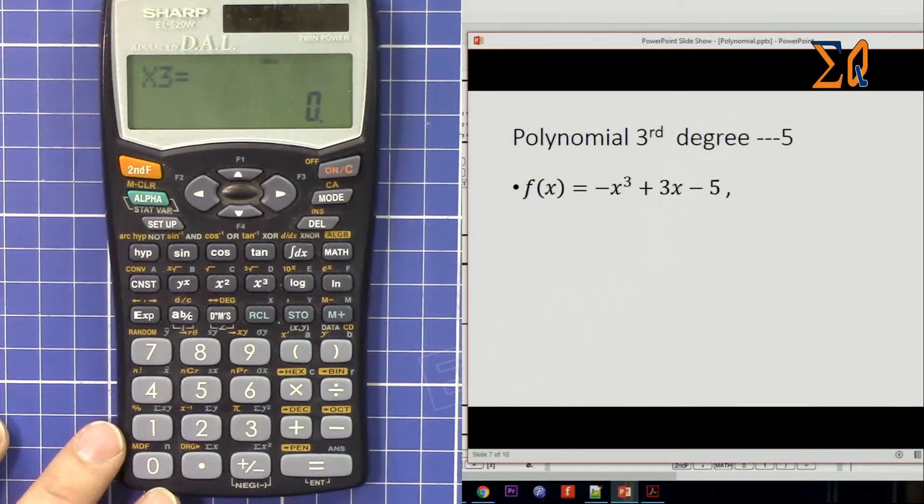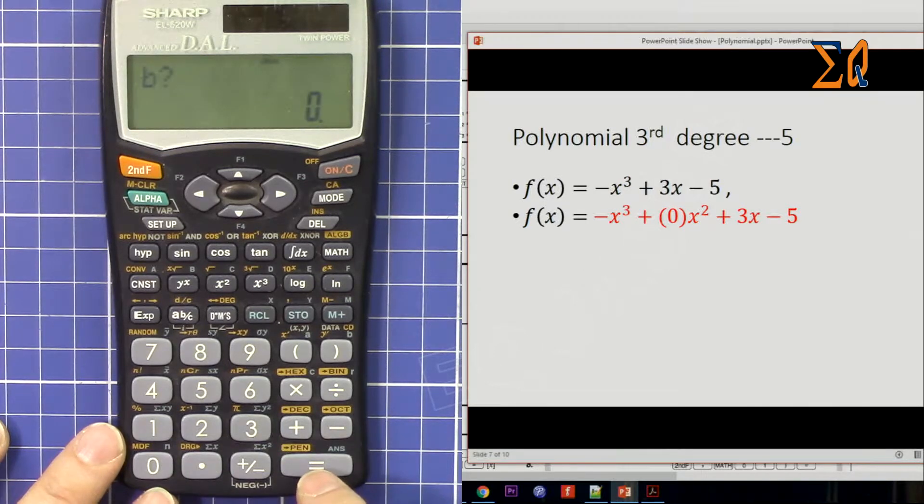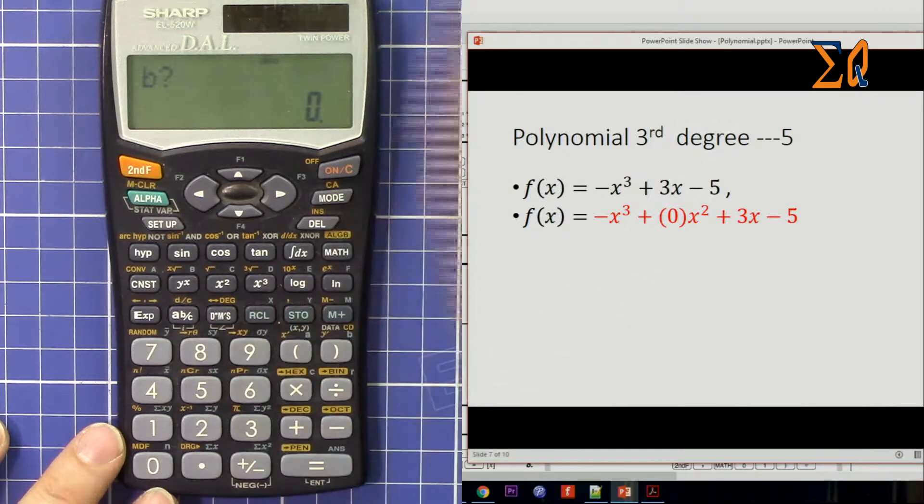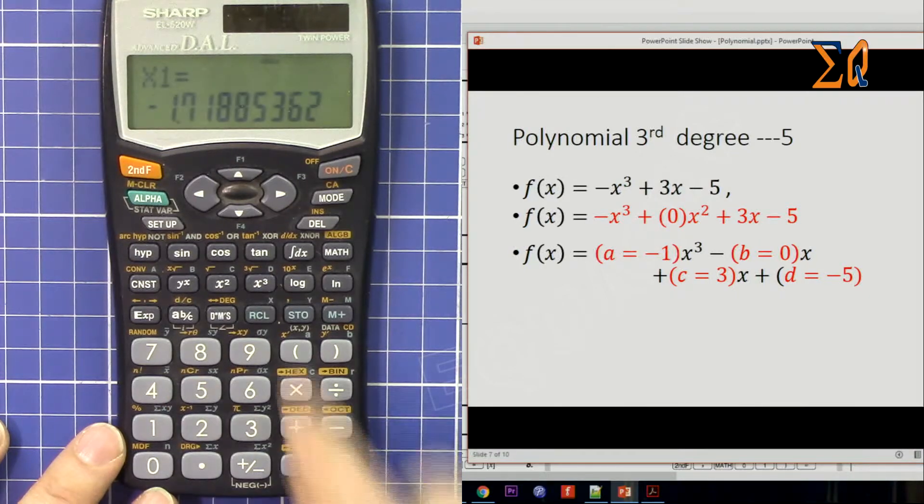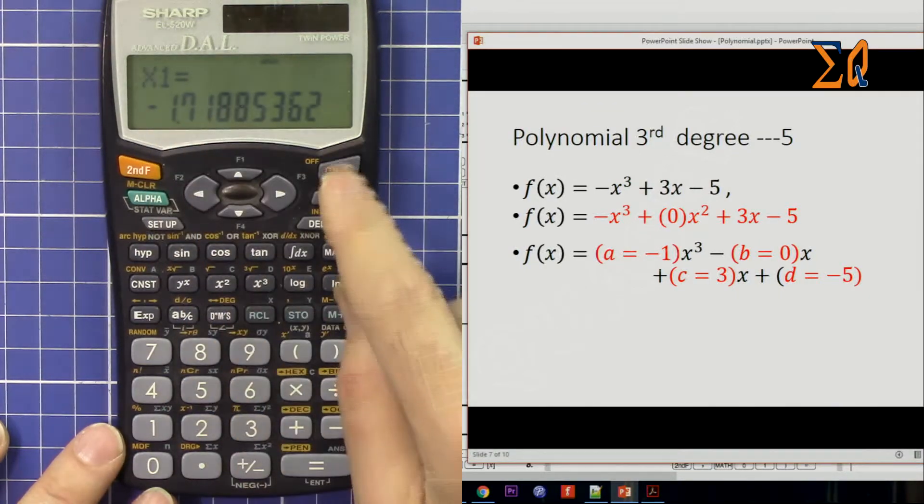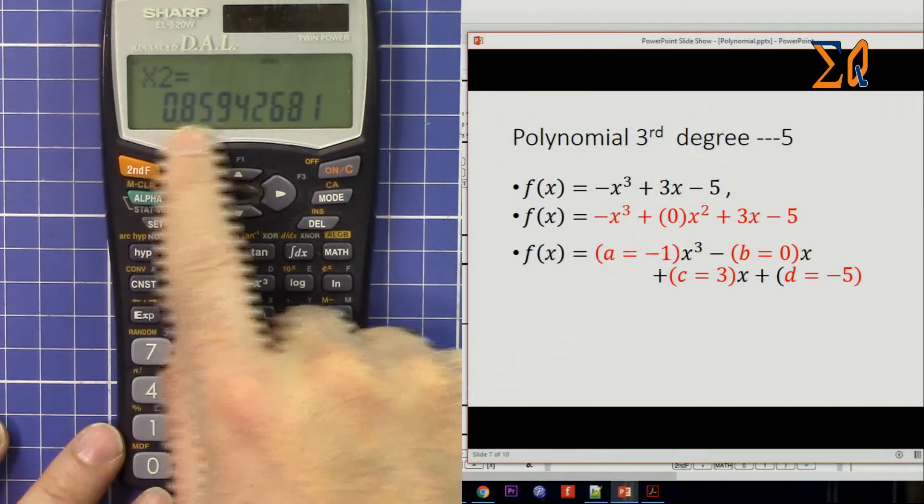So now let's calculate this one. The result here is a is -1, b is 0, c is 3, d is -5. Now we got x1 is -1.7, and x2 immediately shows x and y, so this indicates a complex value.